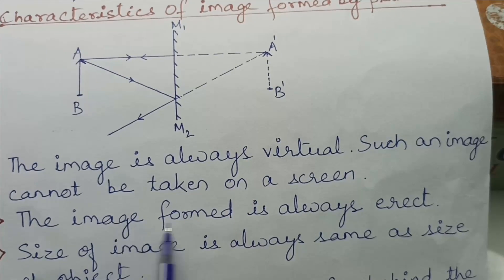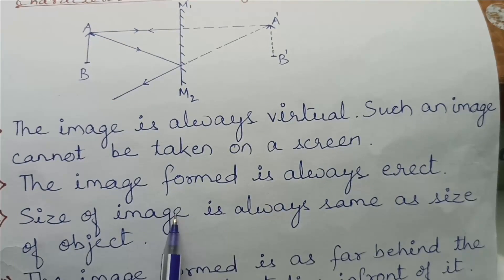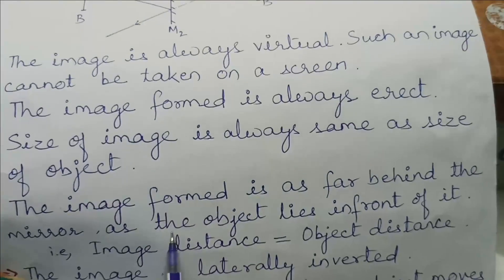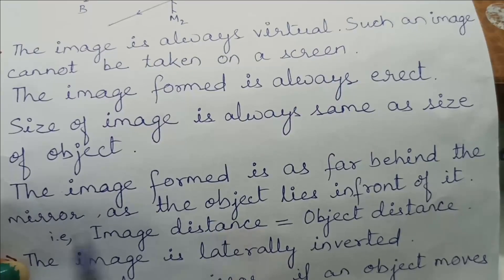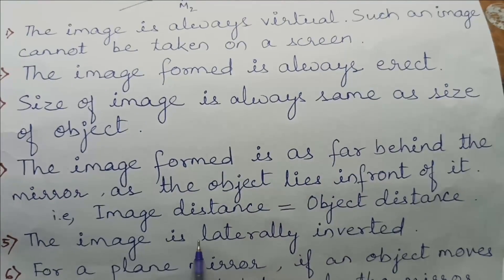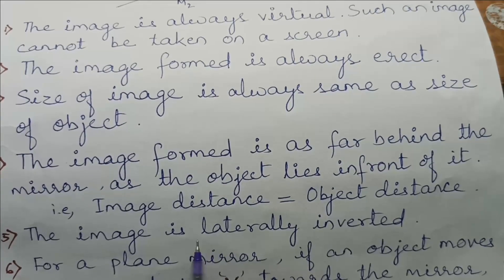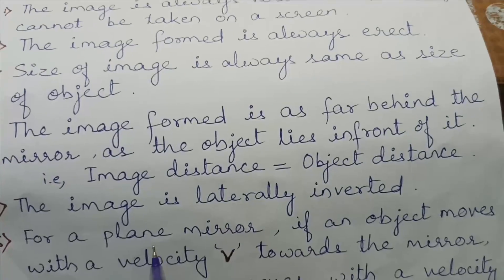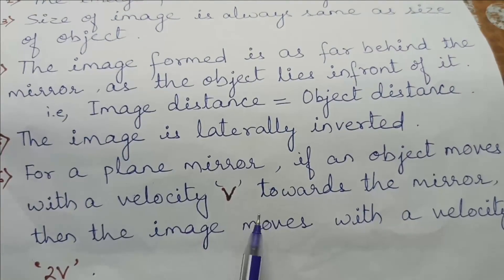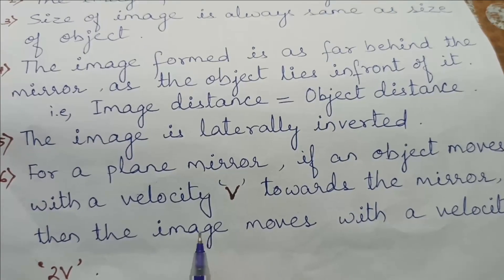The image formed is always erect. The size of image is always same as the size of the object. The image distance is equal to object distance. The image is laterally inverted, i.e., the left side of the object appears to be the right hand side and vice versa. For a plane mirror, if an object moves with a velocity v towards the mirror, then the image moves with a velocity 2v.